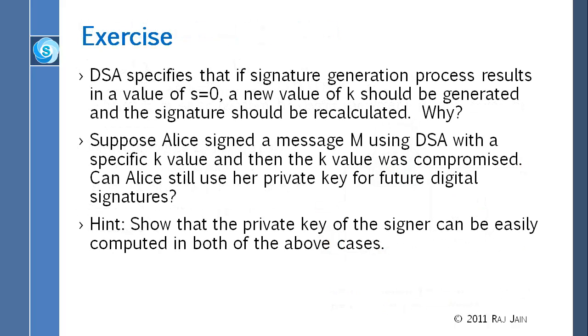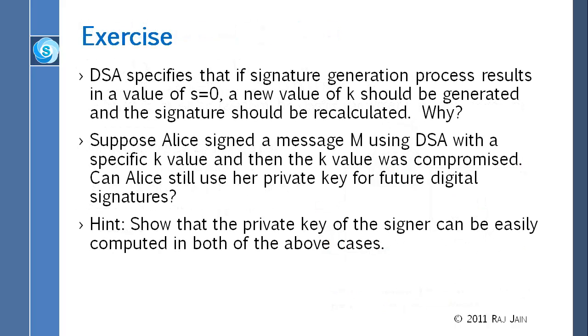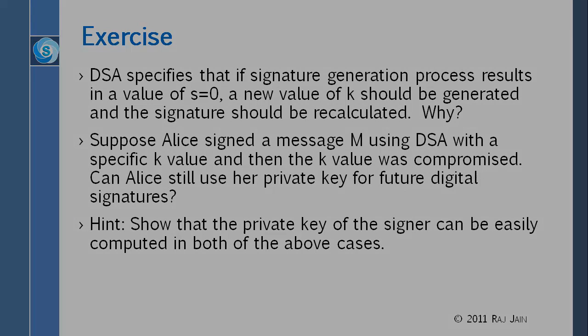Second question is, suppose Alice signs a message M using DSA with a specific K value, and then the K value was compromised. So K is a per message key, that's the random number, right? And suppose somebody finds out what the K value was. Although it is not given in any signature, but suppose somebody finds out. Can you use that same K again for anything else? Obviously not, because if somebody knows the secret, something will not work out and they can generate your signatures. Something like, can you still use a private key for future digital signature? So the private key of the signer can be easily computed in both of the above two cases. So that's the hint, that if somebody finds out K, they can calculate X.